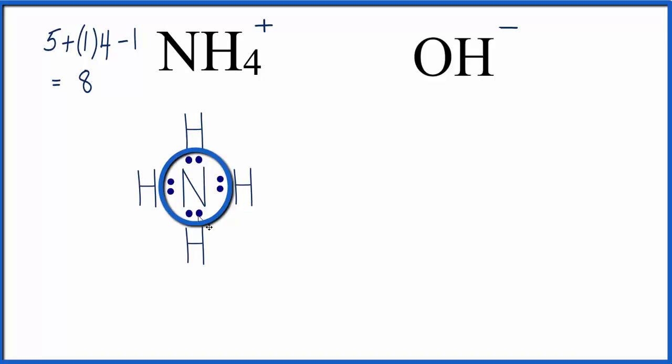The nitrogen has 8 valence electrons around it, so it has an octet. And hydrogen only needs 2, so each of the hydrogens has 2 valence electrons around it, and it has an octet. So this is the Lewis structure for NH4 plus, except we need to put brackets around it and a plus sign to show that it's an ion. So that's NH4 plus.